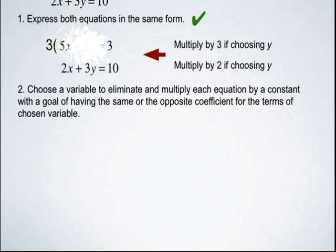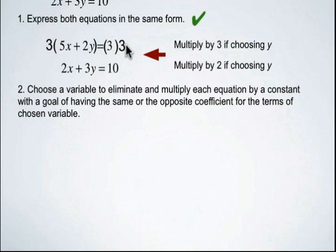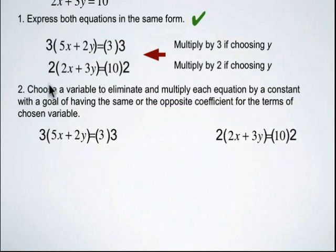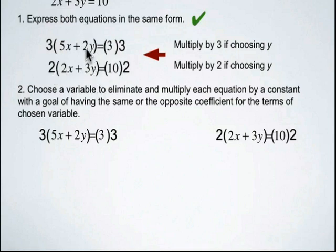Here's what this is going to look like: three times 5x plus 2y equals — if we multiply the left side by three, we have to multiply the right side by three. For the second equation, we multiply both sides by two. We're multiplying by three and two because three times 2y gives 6y and two times 3y also gives 6y, so we end up with the same coefficient on our y variable.